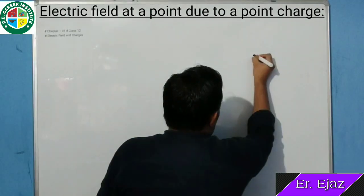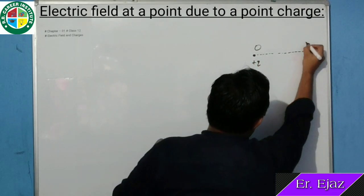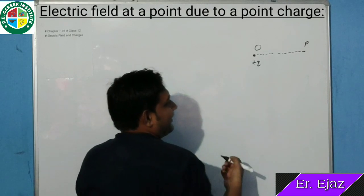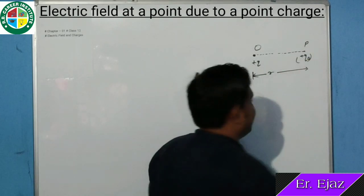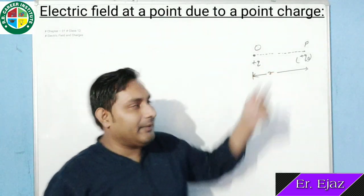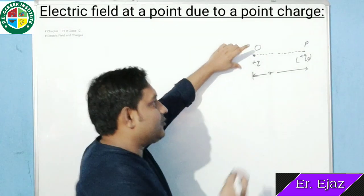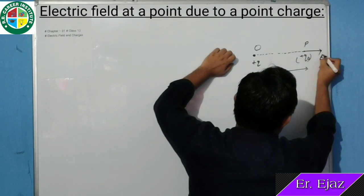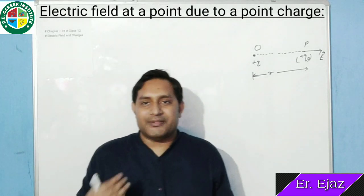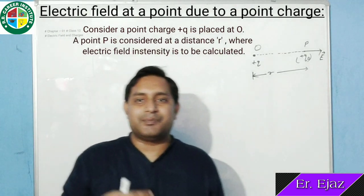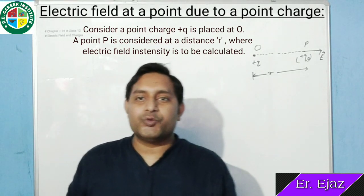Suppose our point charge is plus Q at point O, and if we have a particular distance, suppose that is point P, here we will calculate our electric field at point P. Point P is at distance R, and here we will have a unit positive test charge placed. Electric field is considered at a distance R where electric field intensity is to be calculated.